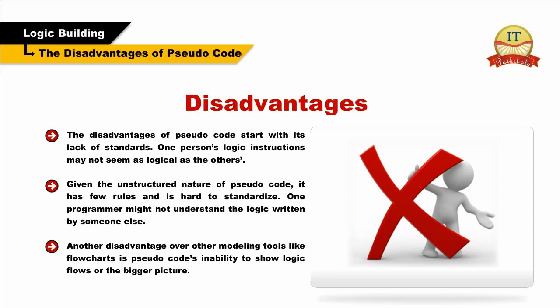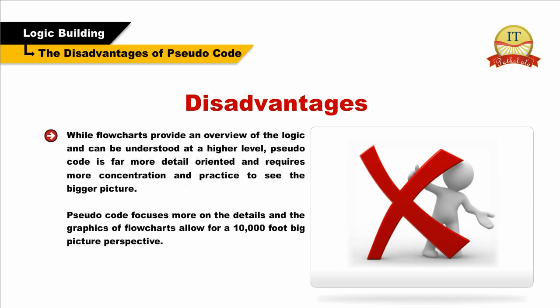Another disadvantage over other modeling tools like flowcharts is pseudocode's inability to show logic flows or the bigger picture. While flowcharts provide an overview of the logic and can be understood at a higher level, pseudocode is far more detail-oriented and requires more concentration and practice to see the bigger picture. Pseudocode focuses on details, whereas the graphics of flowcharts allow for a 10,000-foot big-picture perspective.